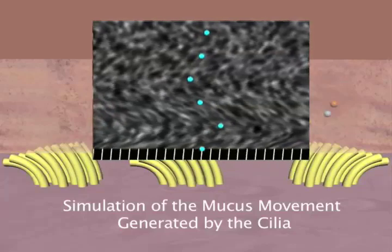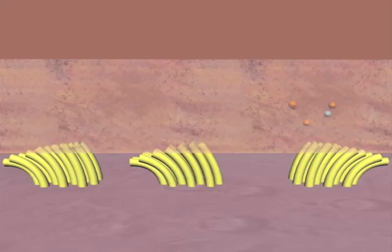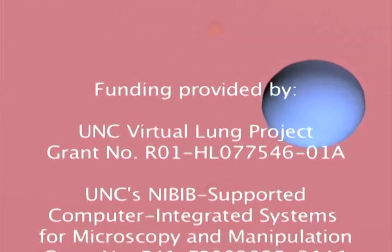Close to the cilia, the mucus beats along with their motion. While above, at the mucus surface, it moves smoothly along, up, up, up, trying to win the race against infection.